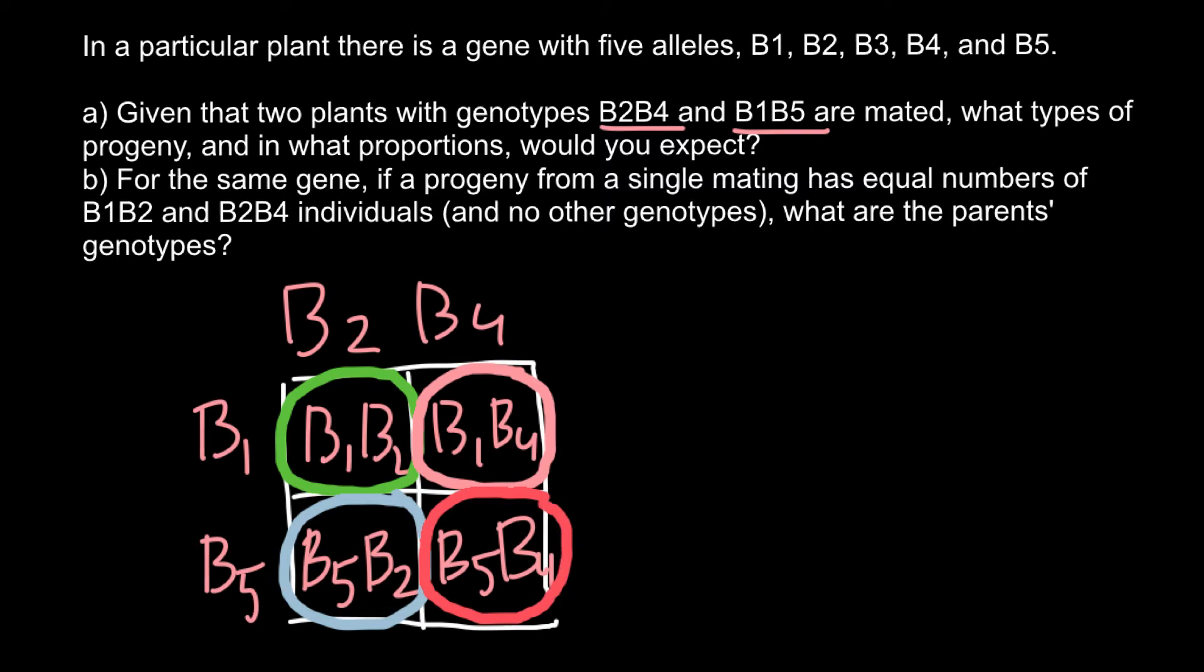So now we can say that each genotype here represents 25% in the progeny. The ratio would be 1 to 1 to 1 to 1. So this is the ratio of genotypes, and this is the answer to question A.